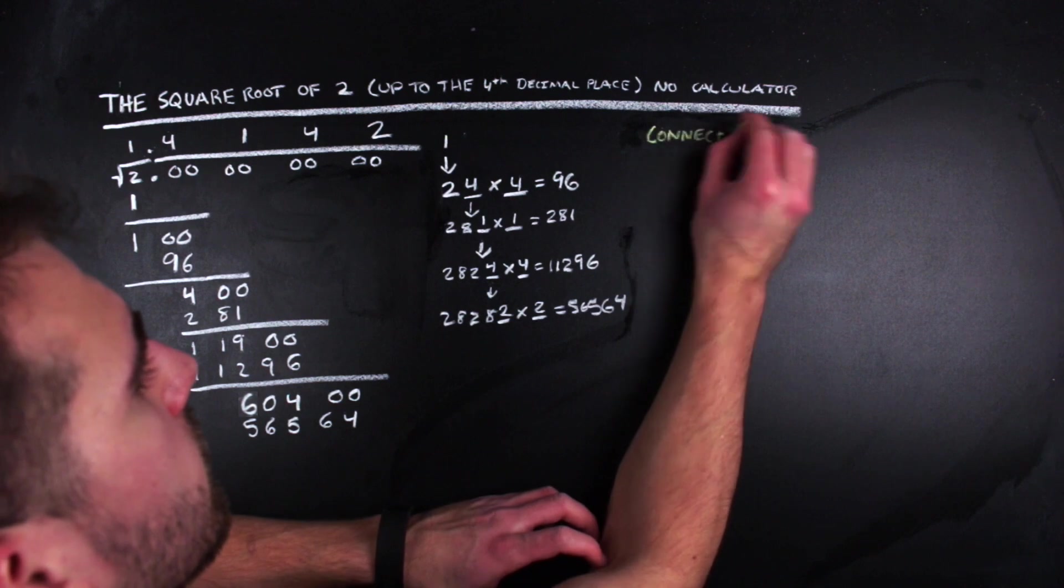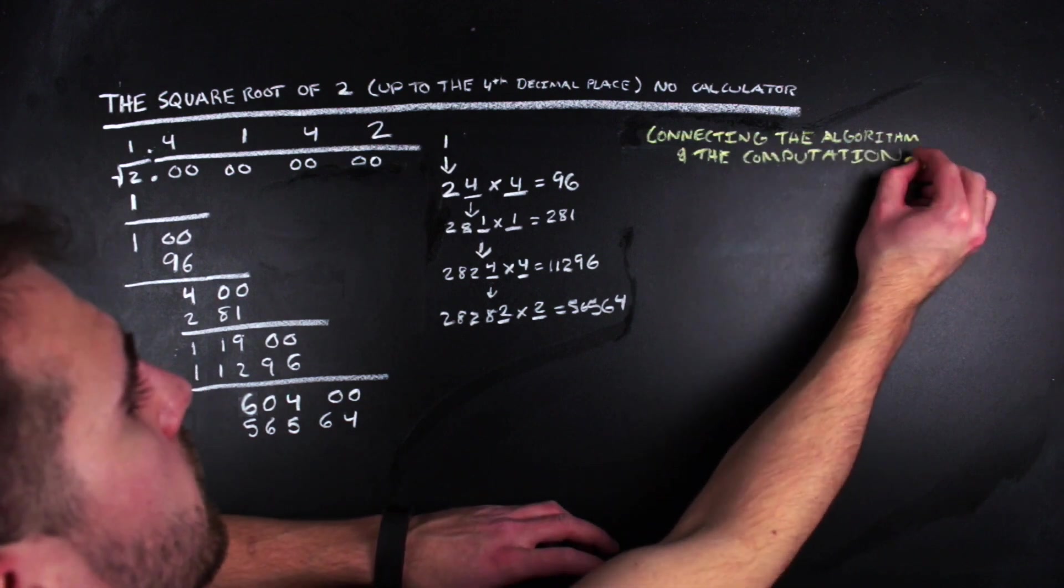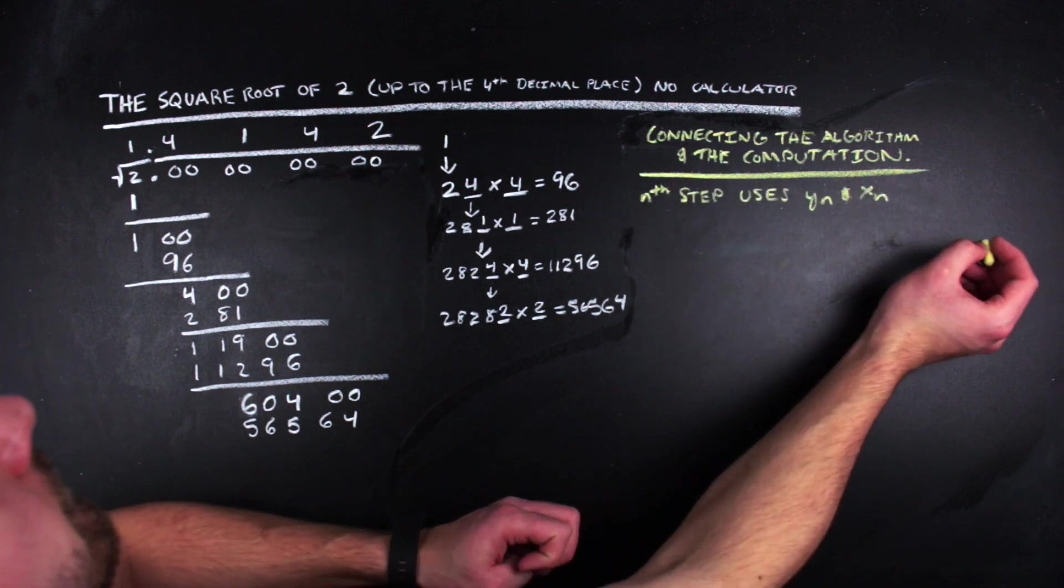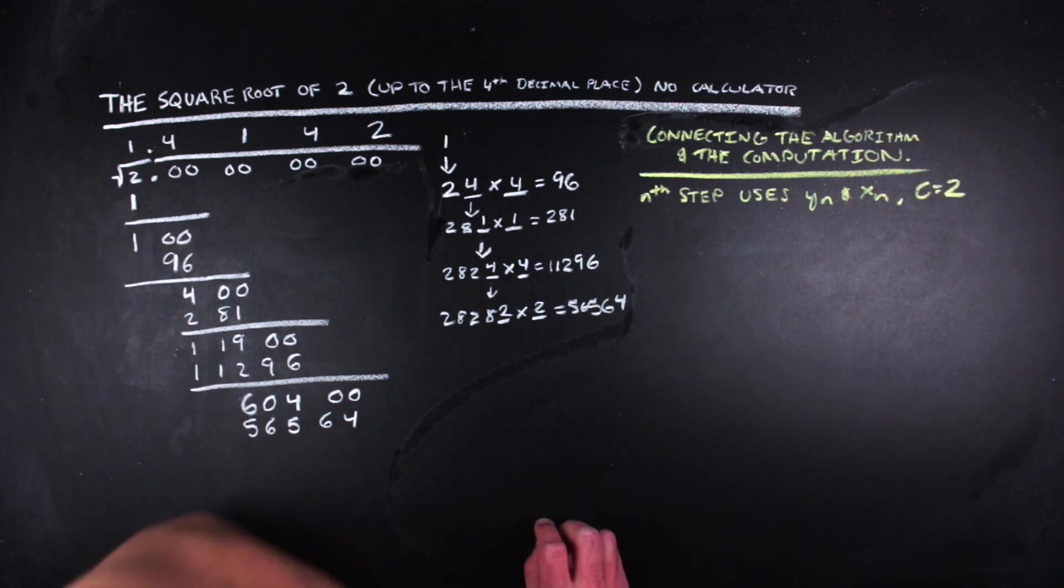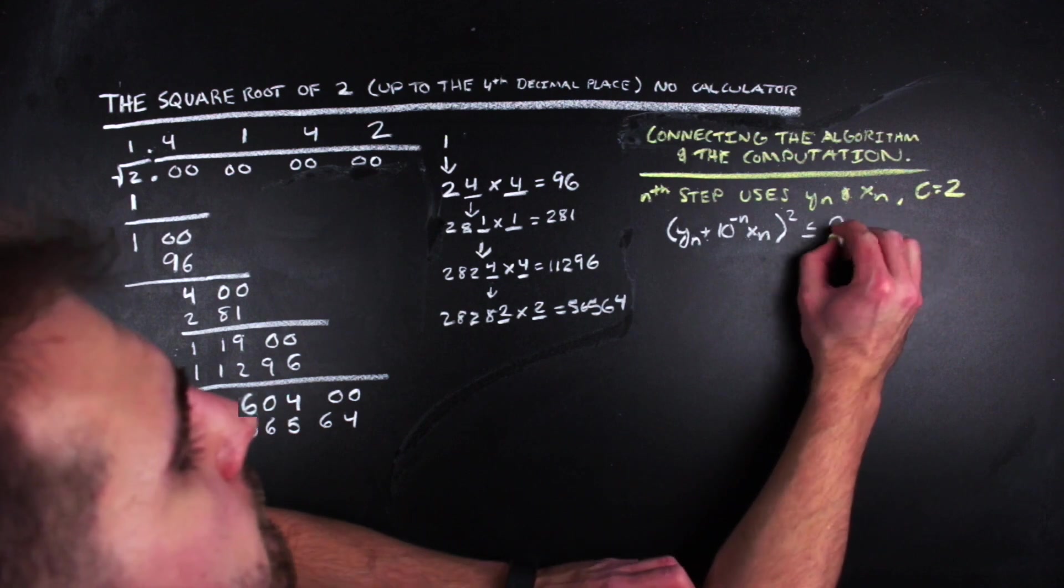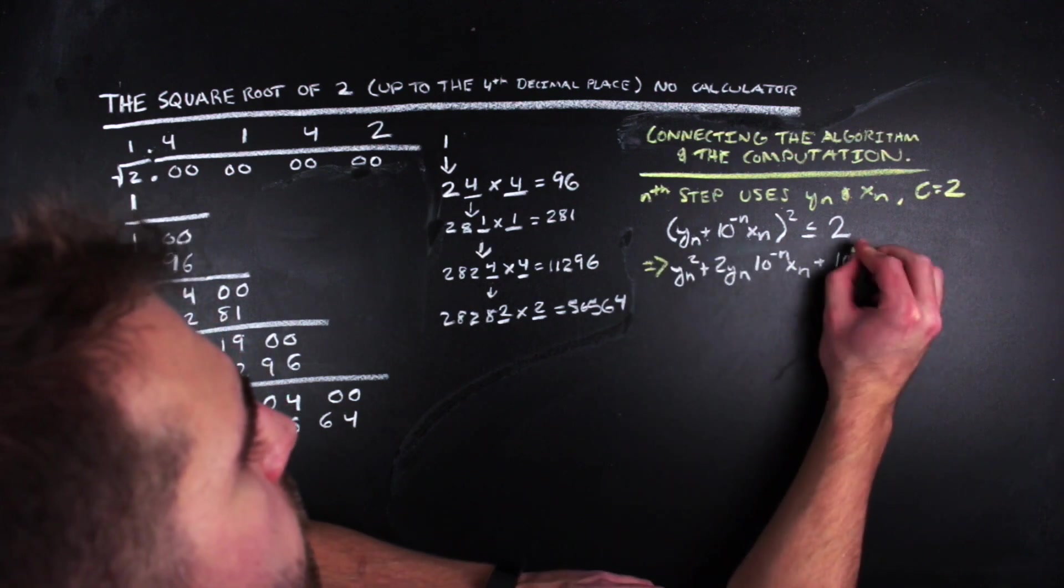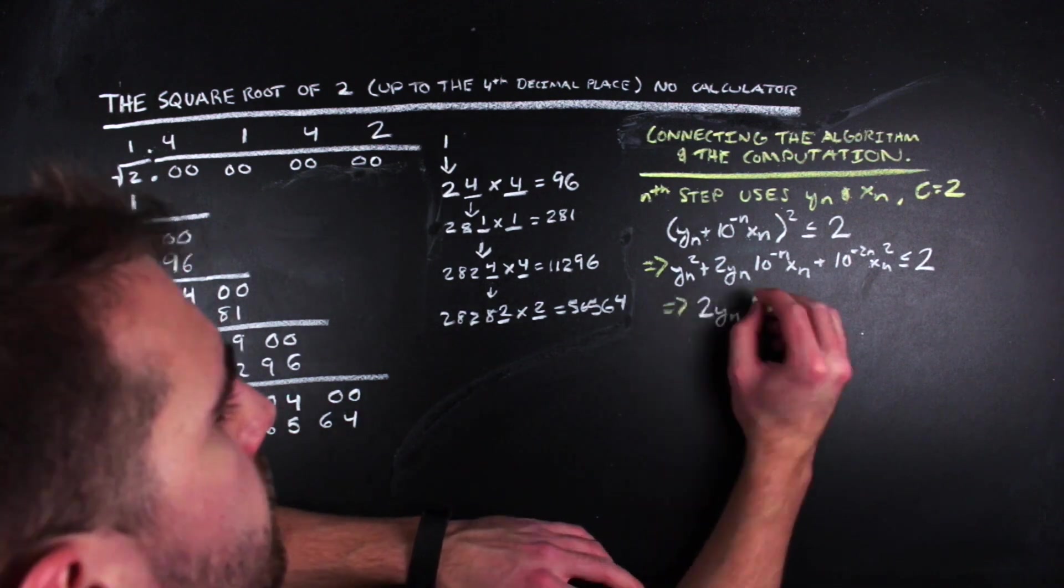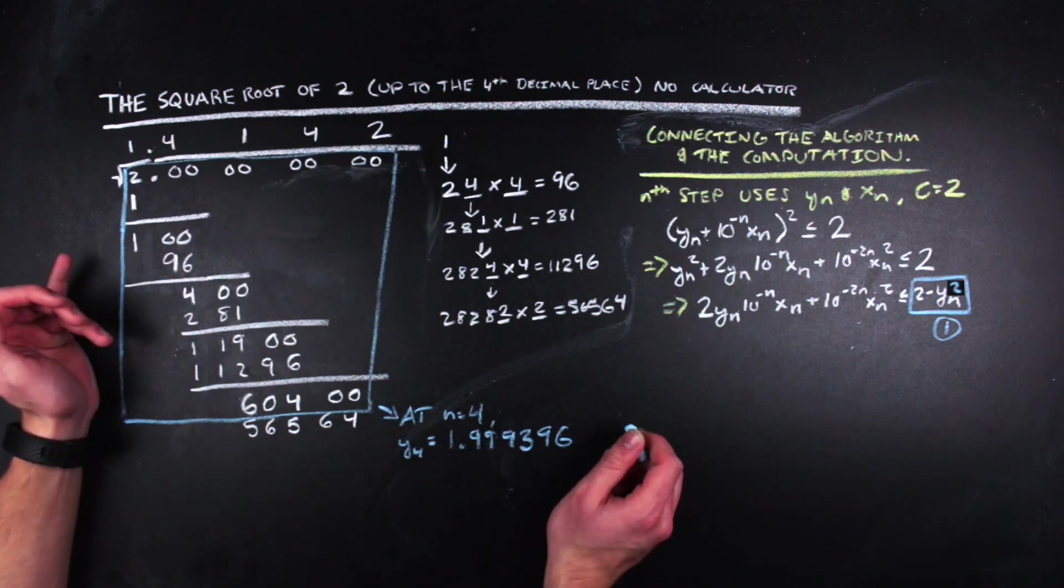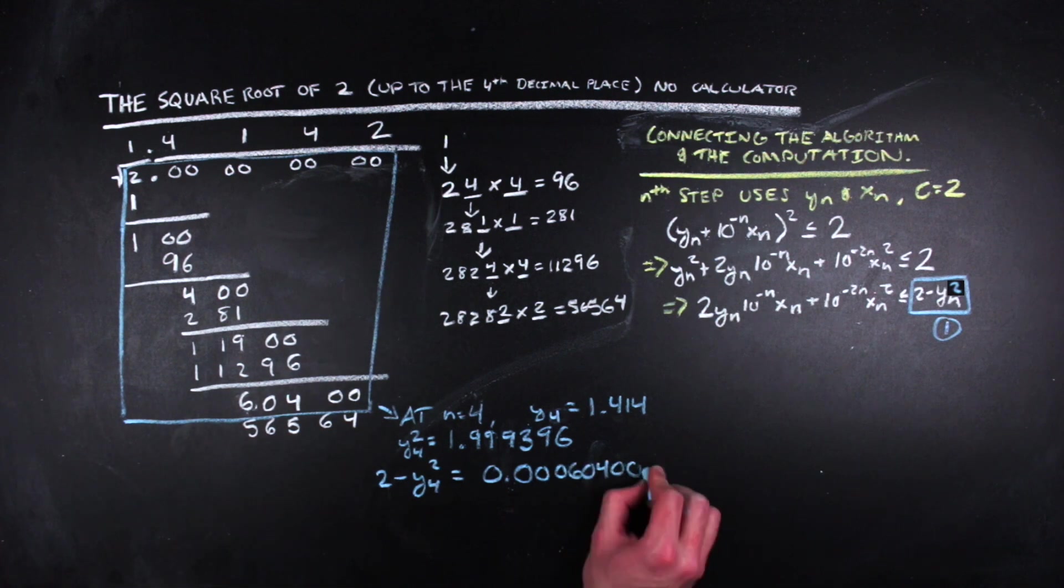All right, so let's go ahead and go back to the square root of 2 computation that we did earlier and flesh some things up. At each step in the computation, we are actually working with y sub n and x sub n to find out y sub n plus 1. Since c is 2 here, we want y sub n plus 10 to the negative n x sub n squared to be less than 2 for each n where y sub n and x sub n fit the conditions of the algorithm. Expanding this binomial square out, we get this quadratic expression less than or equal to 2. And the subtractions that we're doing at each stage in the computation are exactly the same thing as subtracting y sub n squared from both sides of this inequality. That should at least make some sense, since we're just continually subtracting in the long division-like part of this computation.